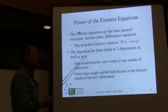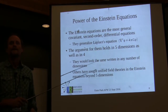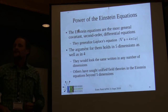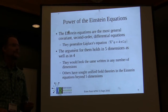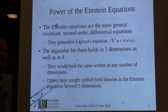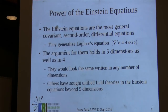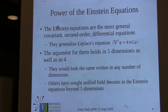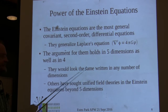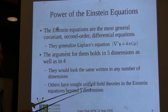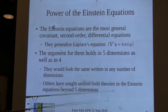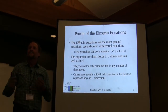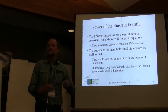The argument for the Einstein equations holds in five dimensions as well as in four - they're not really specific to dimensionality. That was Kaluza's insight: let's apply the Einstein equations in five dimensions. Everything that makes us love the Einstein equations in four dimensions makes them compelling in five as well. After Kaluza and Klein, other researchers got the idea and said, let's go to six dimensions, seven. You have all the degrees of freedom you want, everything's unified. This has really been the basis of unified field theories ever since.